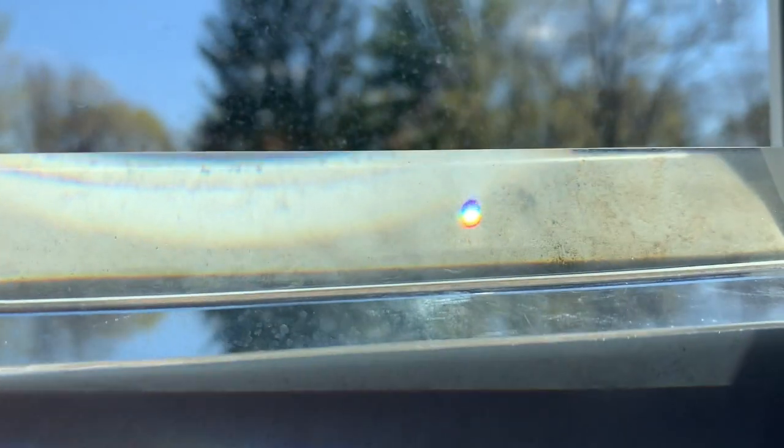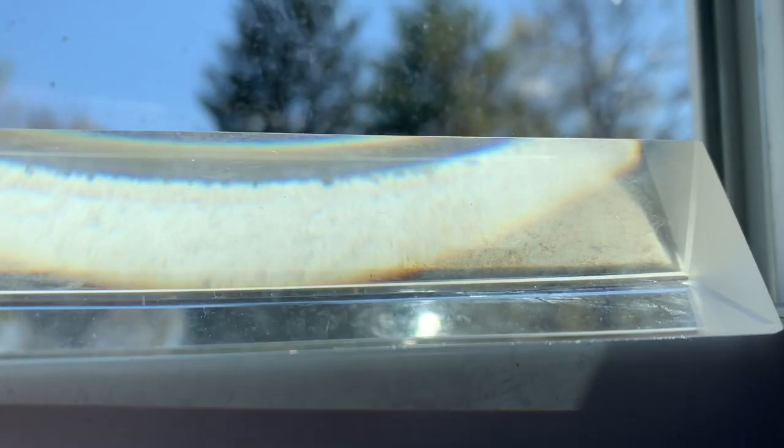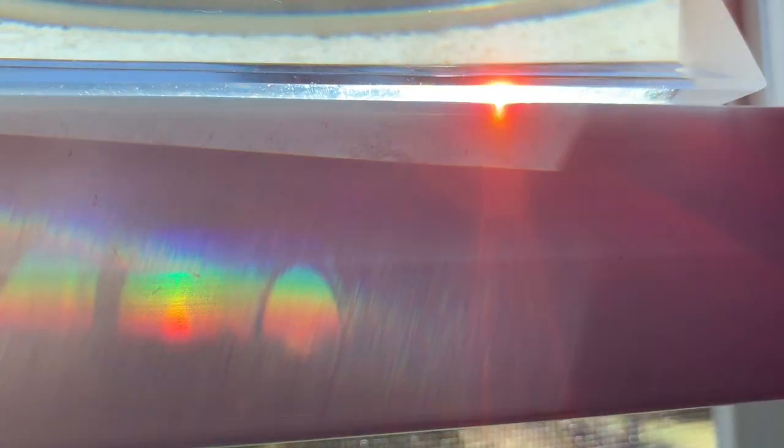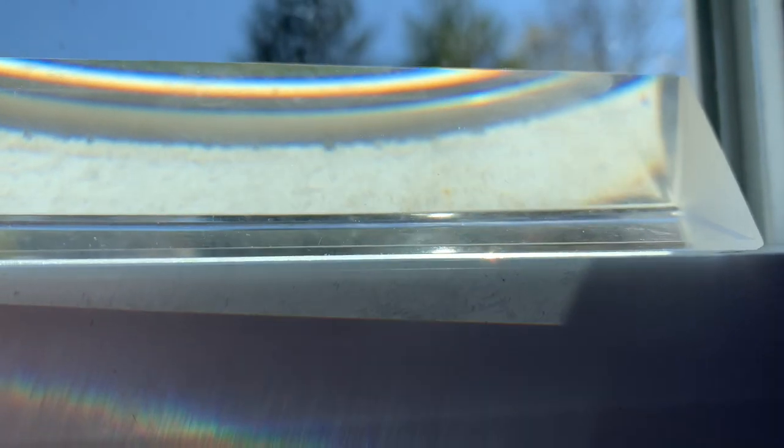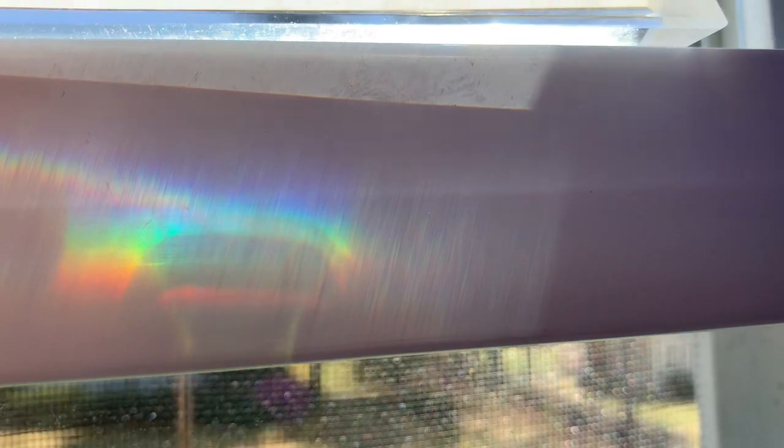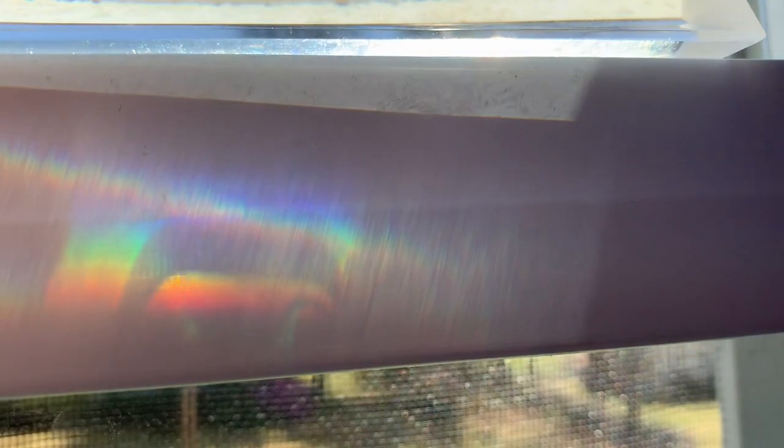One famous example of light bending is when light waves go through something called a triangular prism. When a light beam shines through a prism, the different colors that make up white light refract at slightly different amounts. This means that the colors actually separate and you can see the entire color spectrum from red to violet.